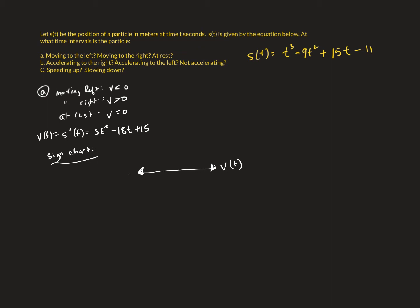Here are the steps for making a sign chart. First, we need to know where the function could change sign — basically where it crosses or hits the x-axis, or where it's undefined, like a discontinuity. So the first thing we're going to do is find where velocity is equal to zero or undefined. A place where a derivative is equal to zero or is undefined is called a critical point, sometimes called critical values.